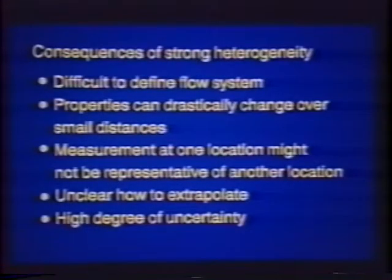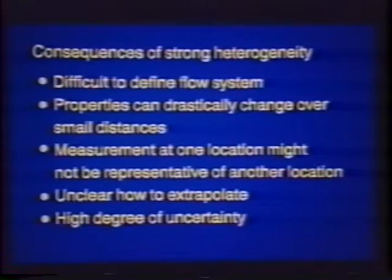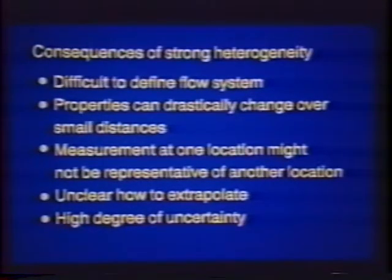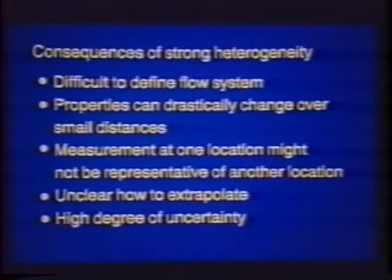At Mirror Lake, 10⁻¹⁰ meters per second is the lowest level we can measure in a borehole — roughly the upper end of a clay material. From this lower limit, we see at least six orders of magnitude of variation. Some parts of the rock are very low in permeability, some relatively high. This is what we call strong heterogeneity, and one consequence is that things we take for granted in sand and gravel environments become difficult. It's hard to define the flow system, properties can drastically change over small distances, and measurements at one location may not be representative of others — adding to a high degree of uncertainty.